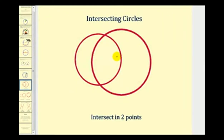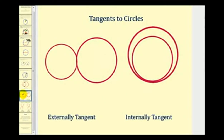When we graph two circles on the same plane and they intersect, there are a couple of things that can happen. One possibility is that they intersect in two points. But it's also possible that two circles intersect at one point, which means the two circles would be tangent to one another. When circles are tangent to each other, they can be externally tangent or internally tangent, as we see in these graphs.